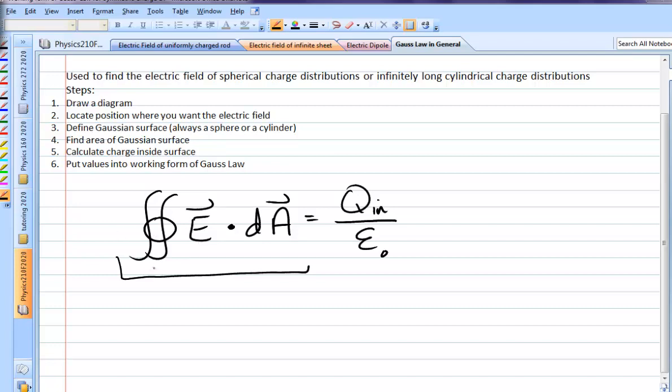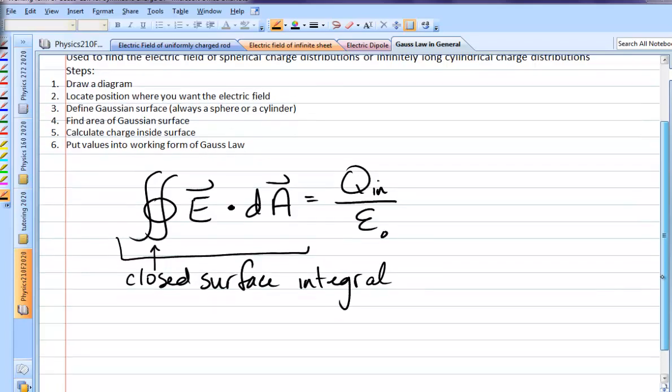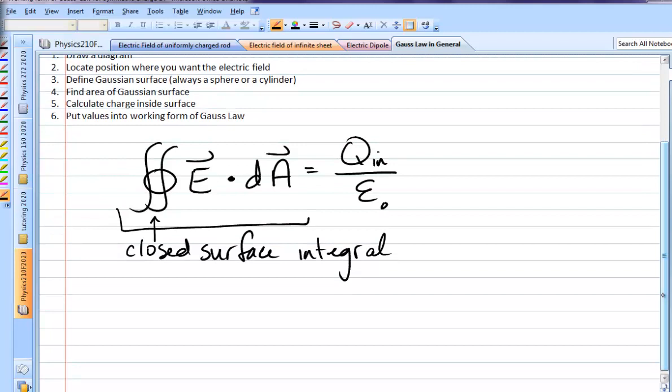This symbol, this double integral with a circle, this means a closed surface integral. Which means we must be dealing always with a closed surface, and that closed surface, we call the Gaussian surface. It is purely a mathematical tool that allows us to calculate electric fields.